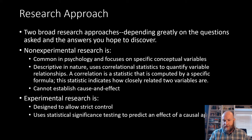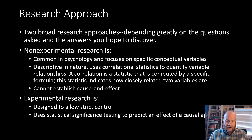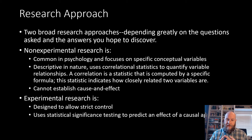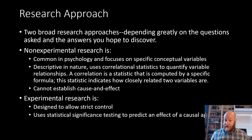There are examples from the book of non-experimental and experimental design. Starting with the non-experimental side: Dunn and colleagues did a study in 2008 where they submitted a survey to 632 randomly selected Americans. It asked about their happiness, their charitable donations, and their annual income — trying to get a handle on the variables underlying the theory they had.